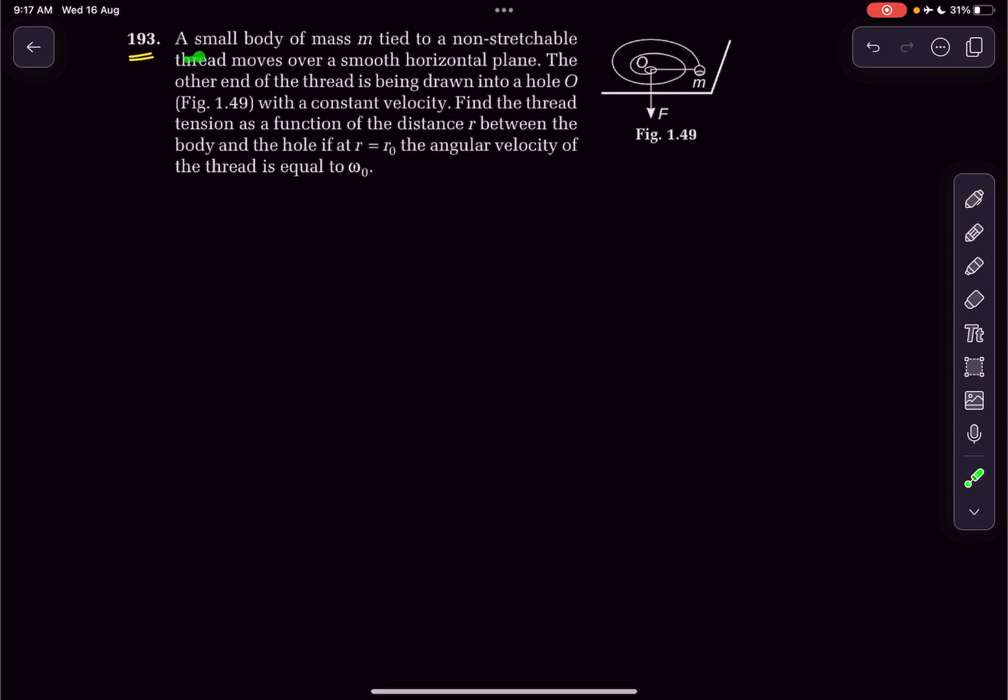In this question we have a small body of mass m tied to a non-stretchable thread moving over a smooth horizontal plane. The other end of the thread is being drawn into a hole with constant velocity. Find the thread tension as a function of the distance r between the body and the hole if at r equals r0 the angular velocity is omega 0.